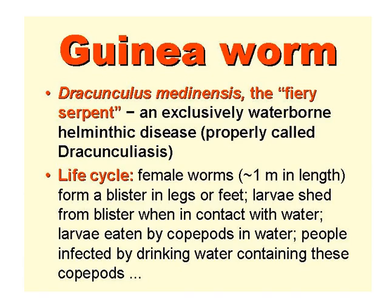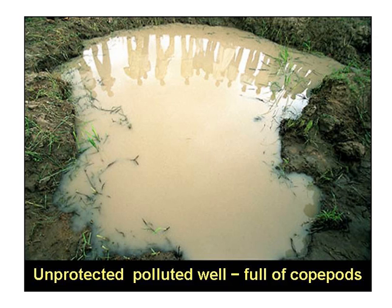Guinea worm is an example of a helminthic disease which is exclusively waterborne. It's often known as the fiery serpent and is properly called dracunculiasis. The female worms, which are about a metre in length, form a blister in the foot or legs, and larvae are shed from this blister when it comes in contact with water. The larvae get into the water, they're eaten by copepods, and people become infected when they drink water containing these copepods. This slide shows a typical unprotected well somewhere in Africa — the water is very dirty and in fact it's full of copepods, the water fleas or cyclops.